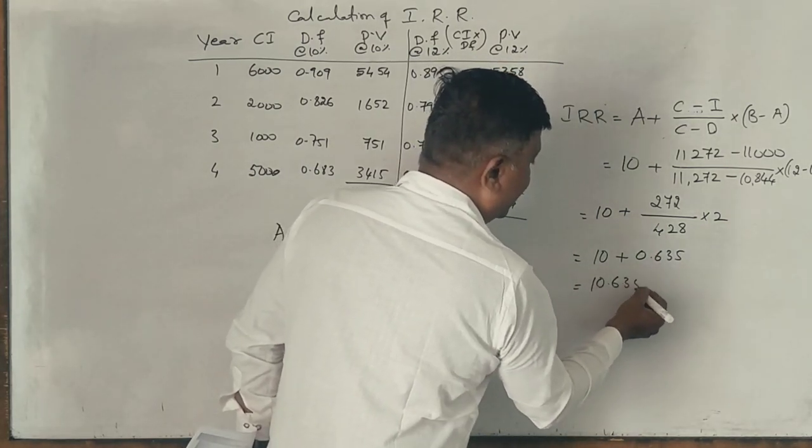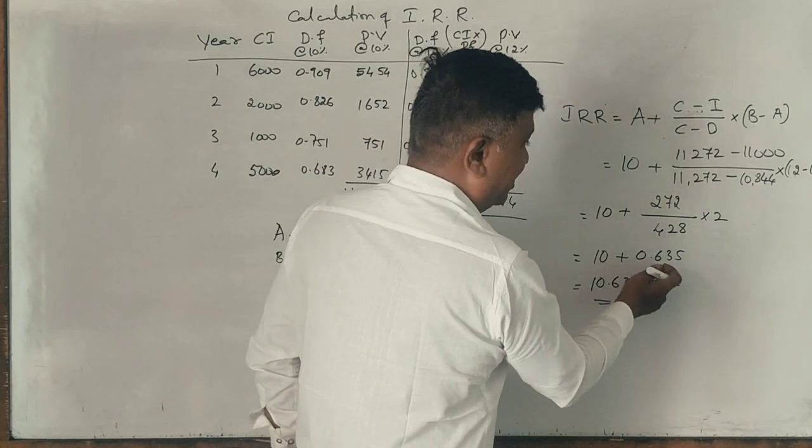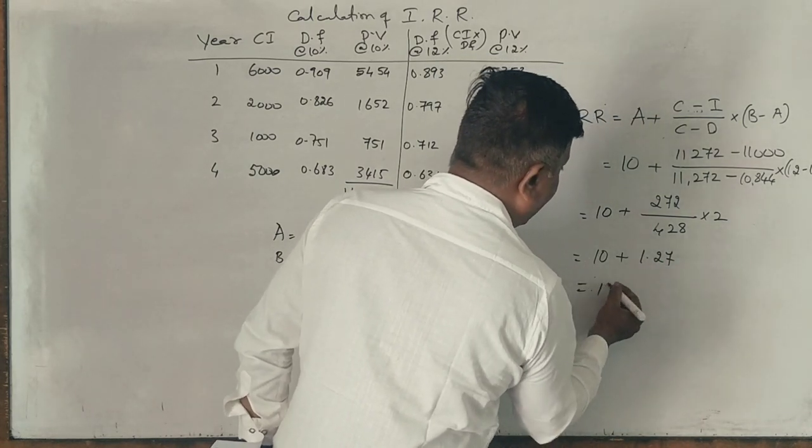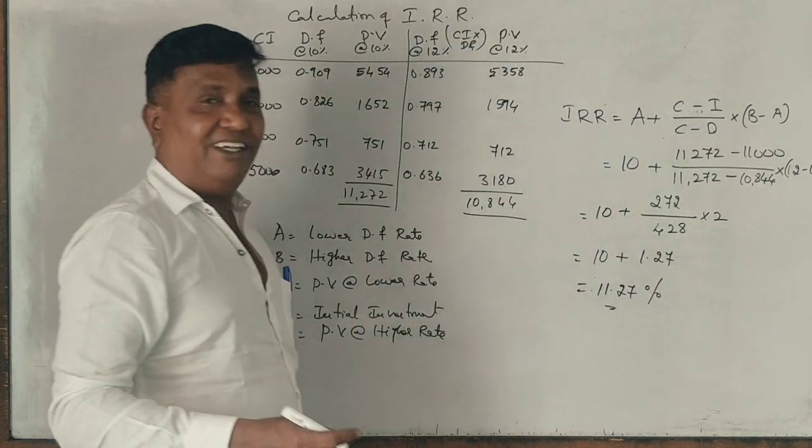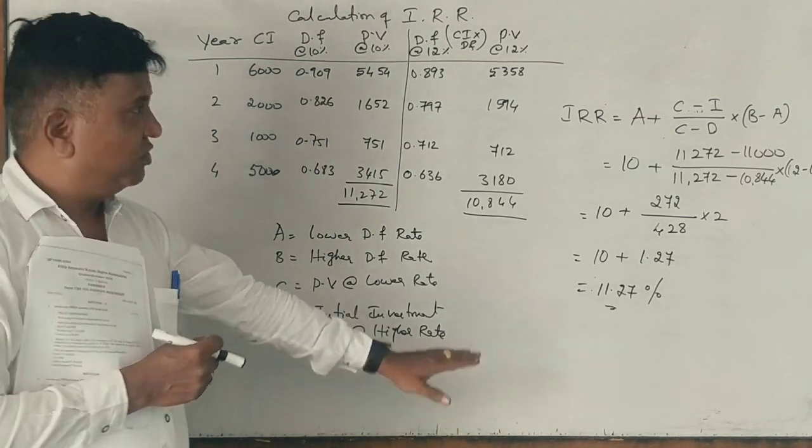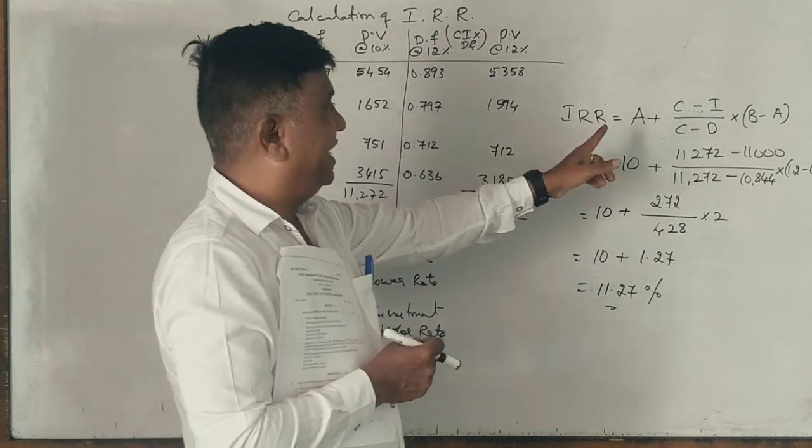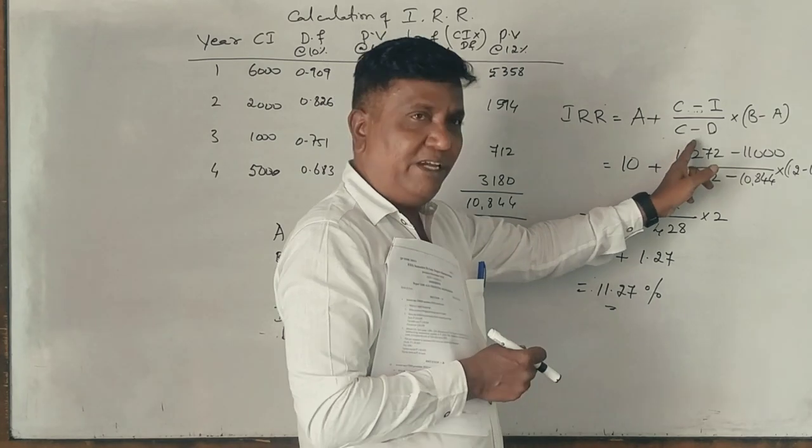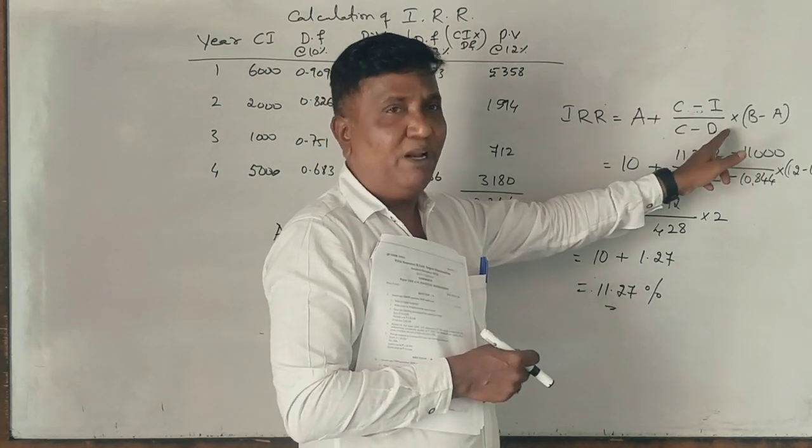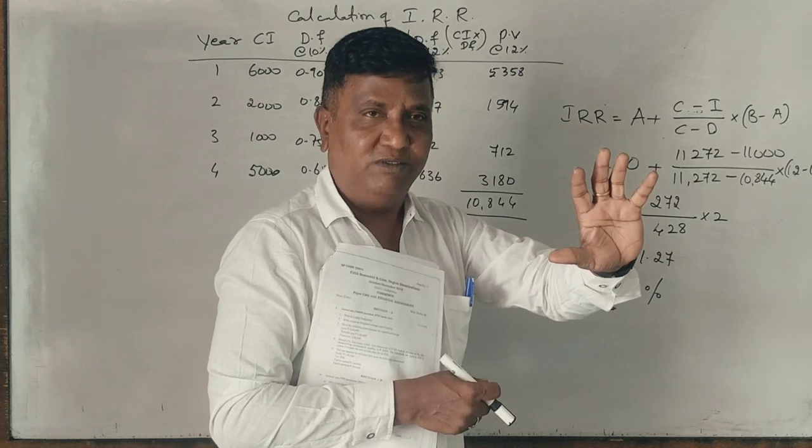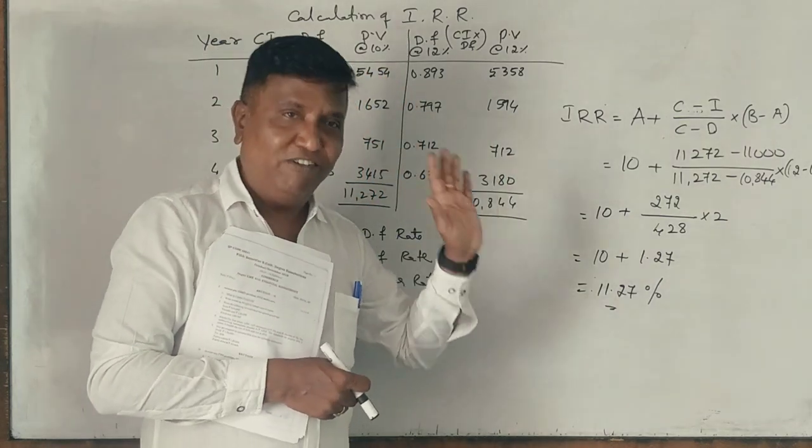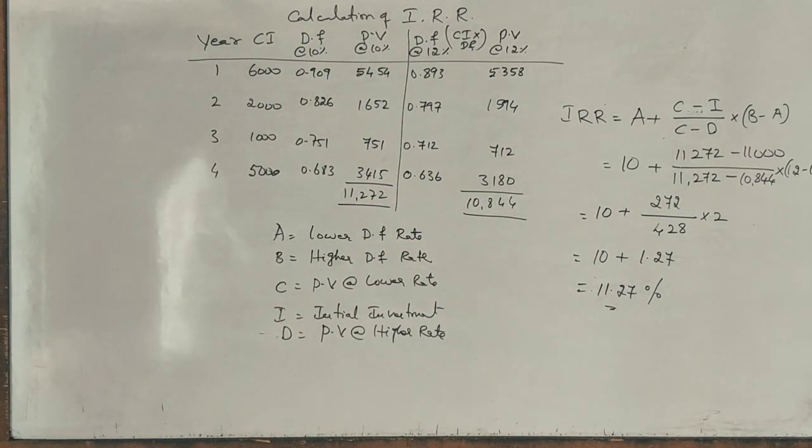1.27, sir. Huh? 1.27, sir. 1.27, sir. 1.27, huh? How, sir? Now, this will become 11.27%. So, this is the internal rate of return when the discount factor higher is 12, lower is 10. Got it? So, formula very easy to remember. A plus C minus I divided by C minus D into B minus A. C and lower present value, D and higher present value, I and initial investment problem. Okay? Now, this question is, 1,10,000, that is absolutely wrong. Okay? That is a very problem. What? Okay. Got it.